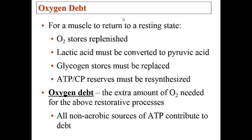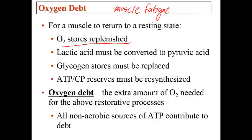In anaerobic exercise, there are only about two ATP produced per glucose molecule. Muscle fatigue is a state of physiological inability to contract even though the muscle may still be receiving stimuli. There are many factors that contribute to this. When muscle fatigue starts to occur, the person goes into oxygen debt — the point at which the muscle needs to gain oxygen in order to return to a resting state. The oxygen stores need to be replenished.